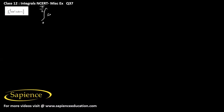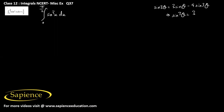We are asked to find the integral from 0 to π/2 of sin³x dx. We know that sin(3θ) can be written as 3sinθ minus 4sin³θ. Therefore, sin³θ can be written as (3sinθ minus sin(3θ)) divided by 4.